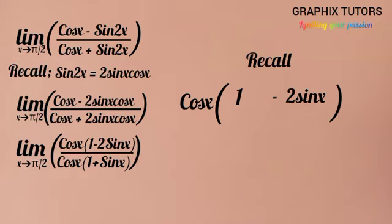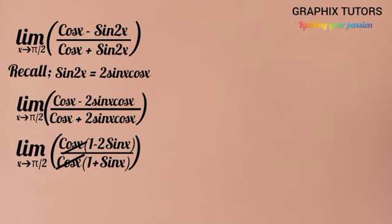Now if you look at your expression, cos x is going to cancel with cos x. We'll be left with limit as x tends to π/2 of (1 - 2 sin x) over (1 + 2 sin x).